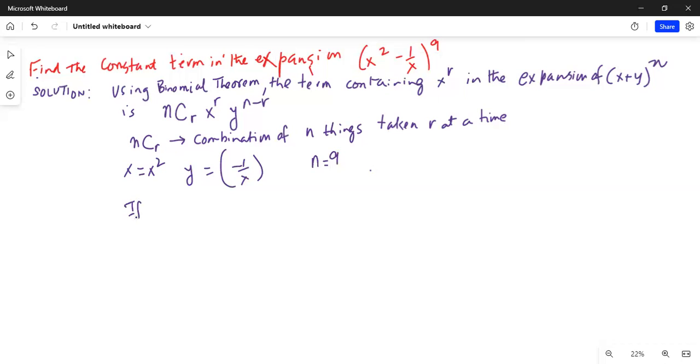If r is equal to 3, then n - r is equal to 9 - 3 is equal to 6. And the term containing x³ in this case, remember n is 9.